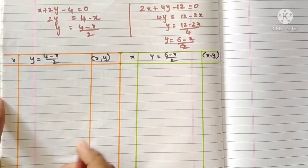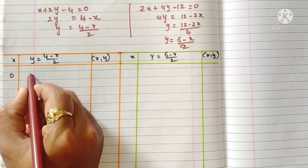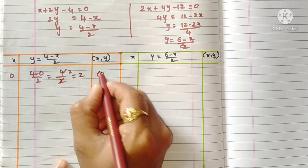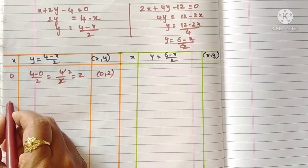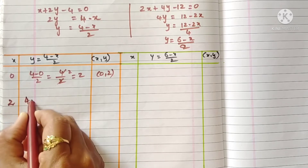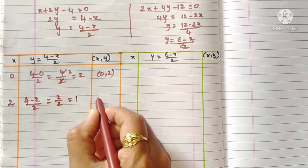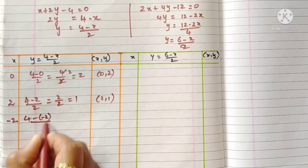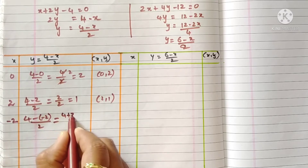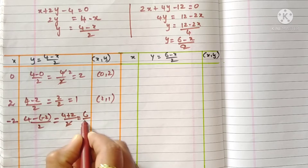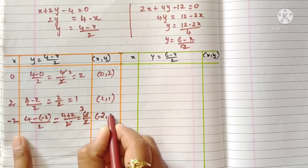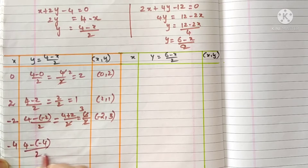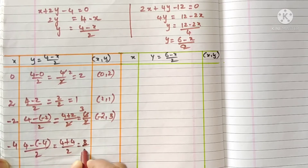For the first line, if x is 0: y equals four minus zero by two, that is 4 by 2, so y equals 2. Point: (0, 2). If x is 2: y equals four minus two by two, that is 2 by 2, so y equals 1. Point: (2, 1). If x is minus 2: y equals four minus minus two by two, that is 6 by 2, so y equals 3. Point: (minus 2, 3).